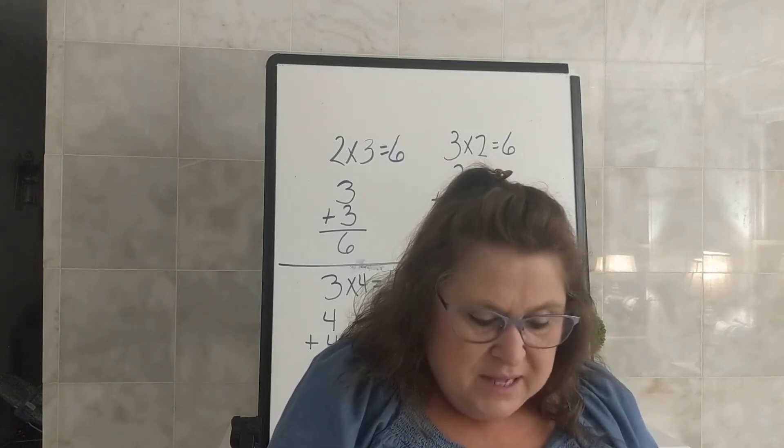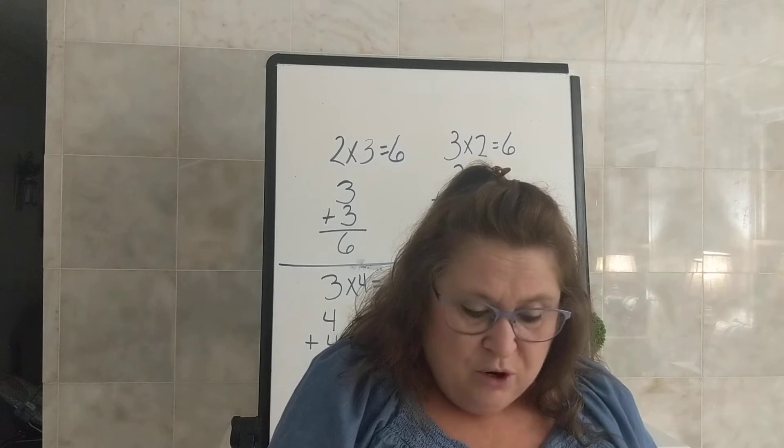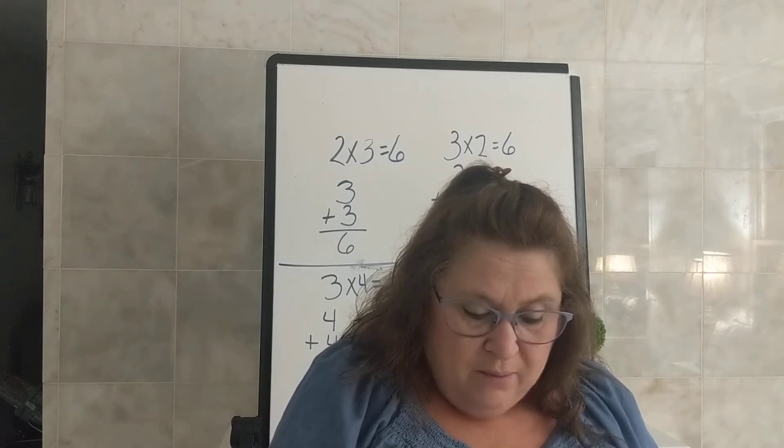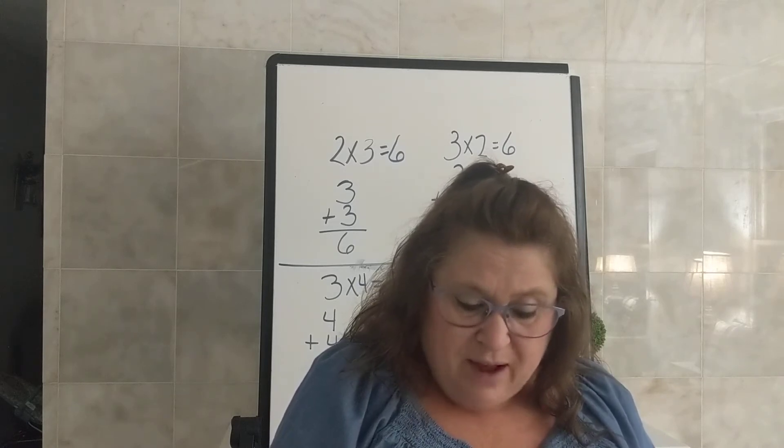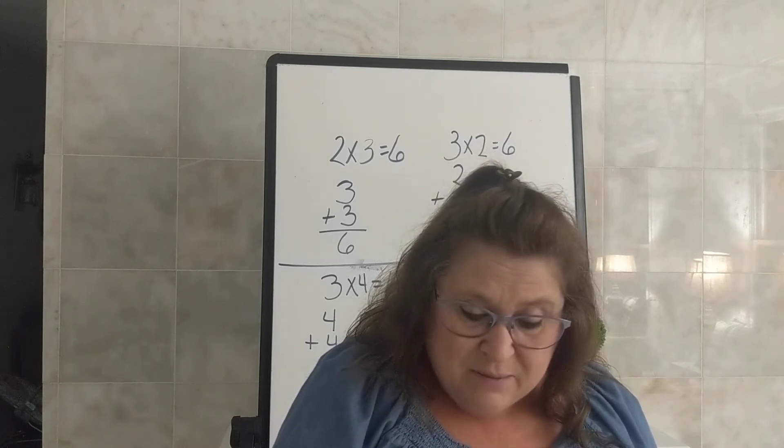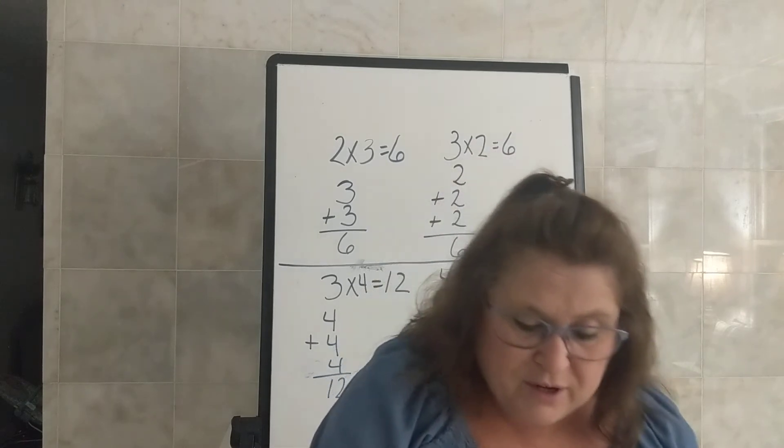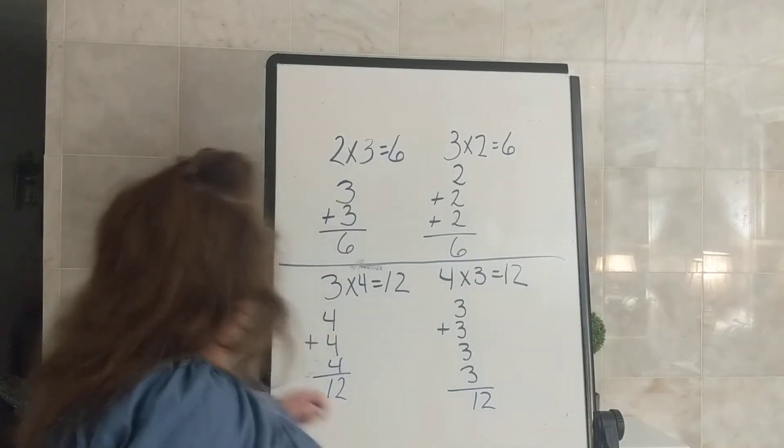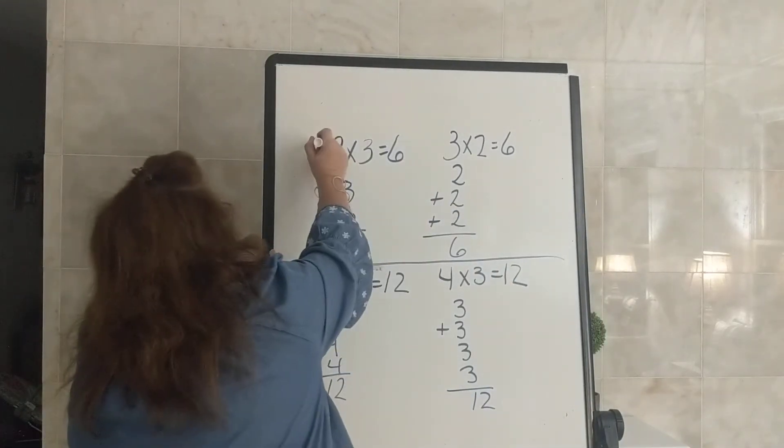You can tear page 29 and 30 out, put your name and date at the top. You can pause the video while you do this. So in section 1, letter A, you are going to show the facts 2 times 5 four different ways. Letter B, you're going to show the fact 3 times 4 four different ways.